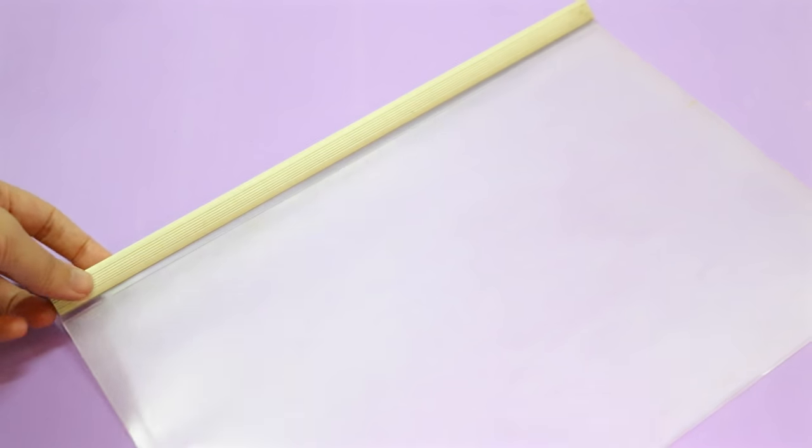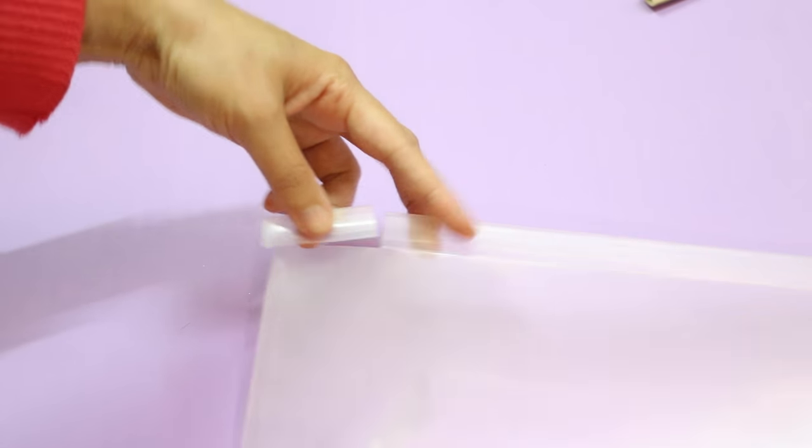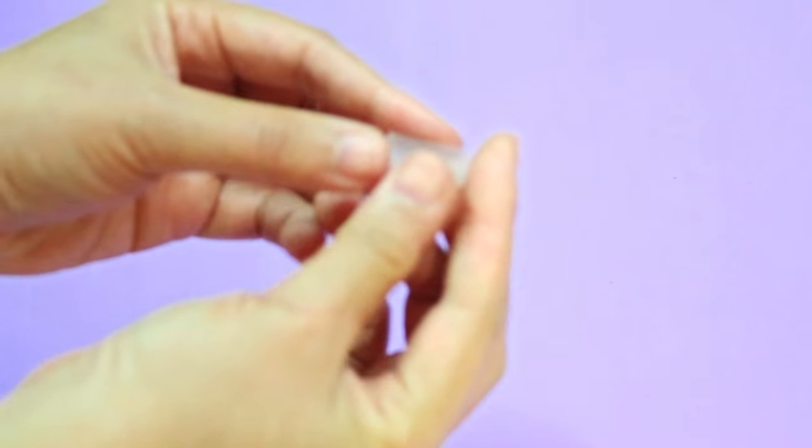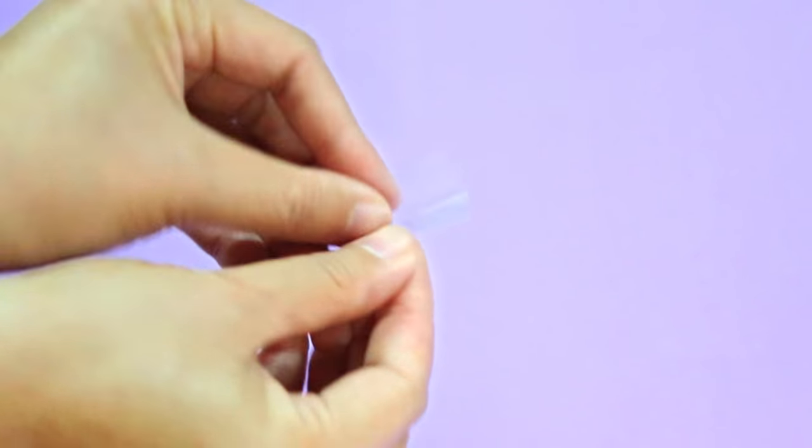Alright, we're almost done guys! To make the hinges for the sunglasses, I'm using this old binder. Cut out a little piece from the binder like so, then cut it in half. You'll get 2 hinges which can open and close like this.